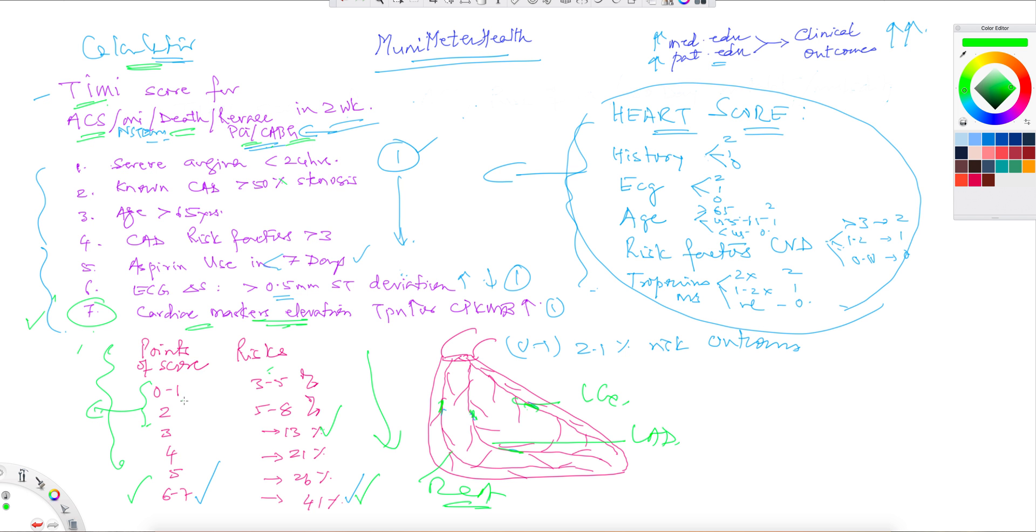The second caveat, as I said, if the score is zero, you still have a 2.1% risk in terms of clinical outcomes. And three, the strongest cardiac risk factor here is your troponin elevation or CPK MB elevations. This is the biggest marker, out of the entire seven categorical markers here we have enumerated.